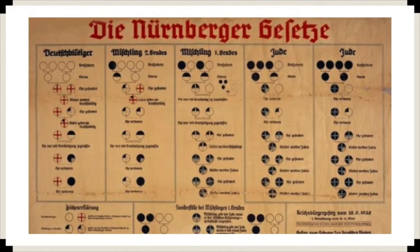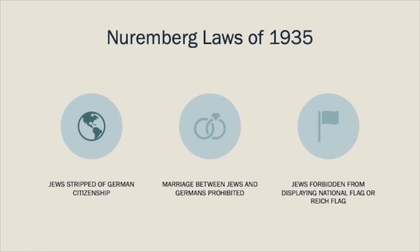The Nuremberg Laws changed the definition of race in Germany. In addition to defining who is considered a Jew in the Third Reich, the Nuremberg Laws also did three other things. First, they stripped Jews of their German citizenship. Second, they forbade marriage between Jews and Germans. Third, Jews were forbidden from displaying the national flag or the Reich flag. Not only do these laws define who exactly a Jew is, but they also use that definition to take incremental steps of withholding rights and privileges from this community.